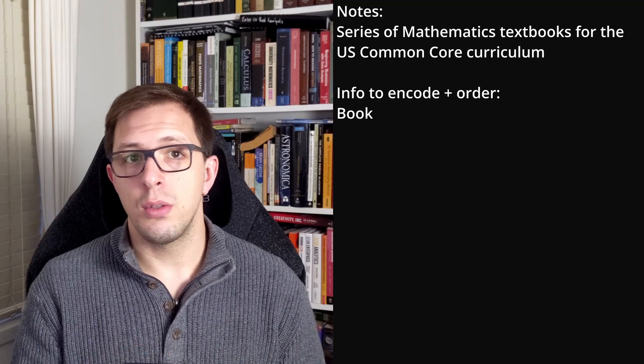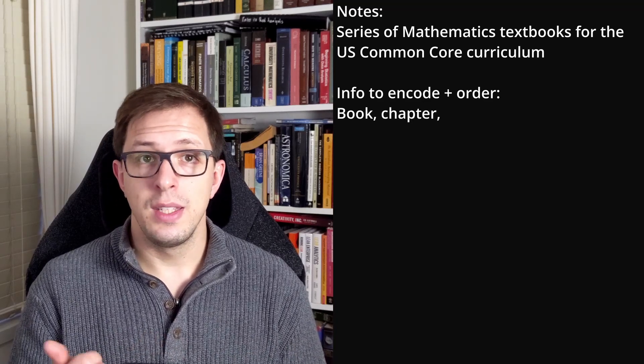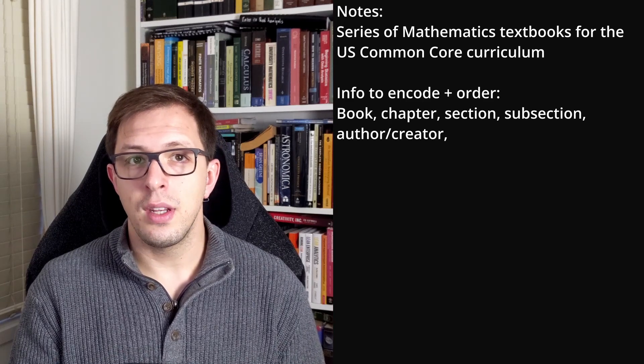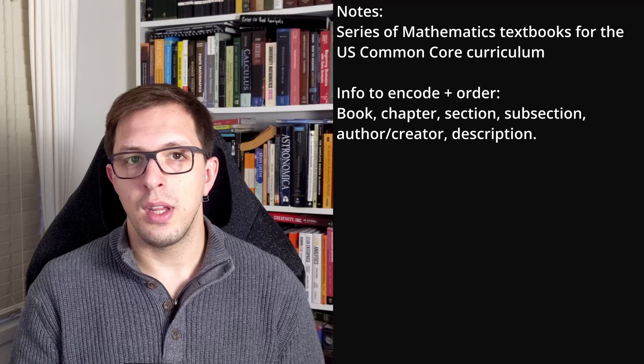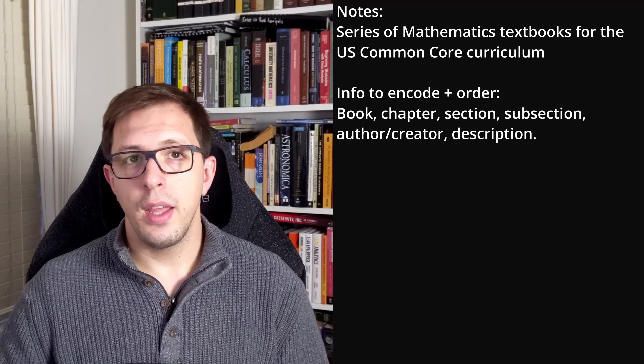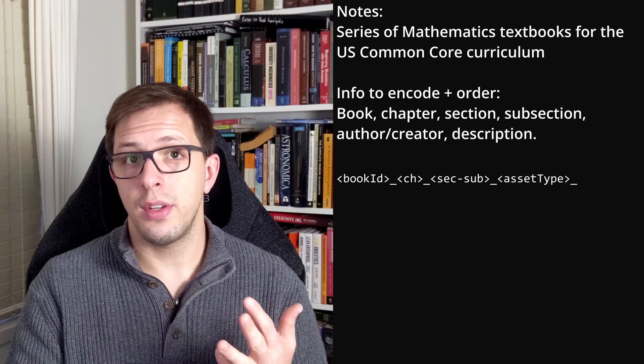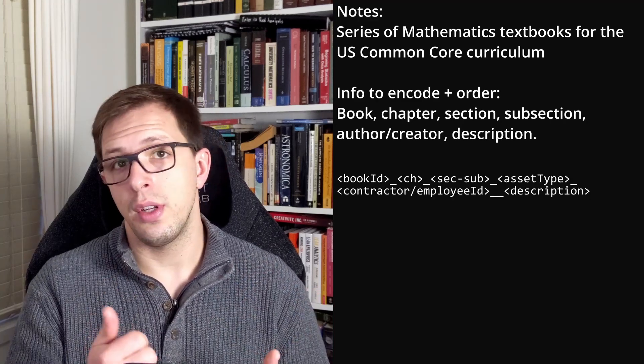I also want the assets to be grouped sequentially by chapter, section, and subsection. I also want to know what contractor or employee created the asset, and I want to know what the asset contains in the form of a short description. In this case, I want the book ID, chapter, section, and subsection, asset type, contractor ID, and a content descriptor.